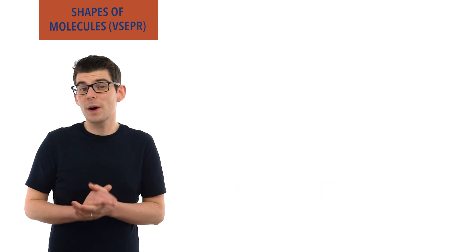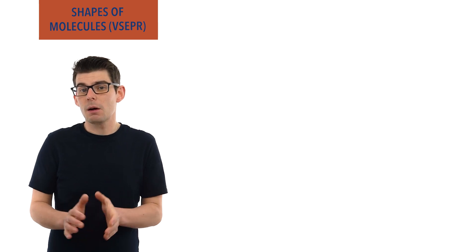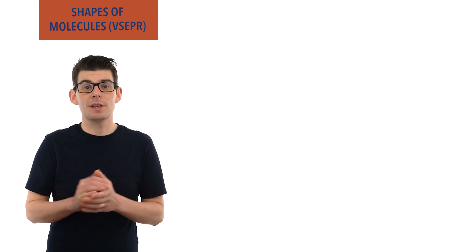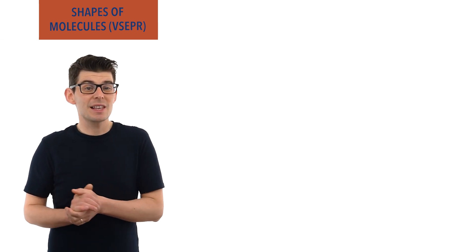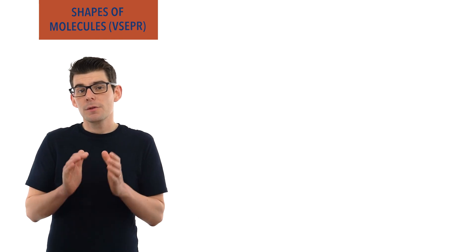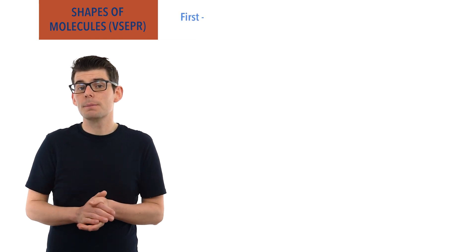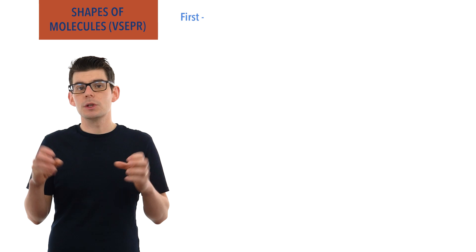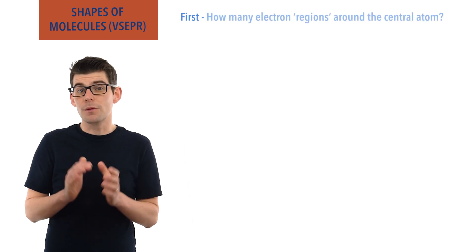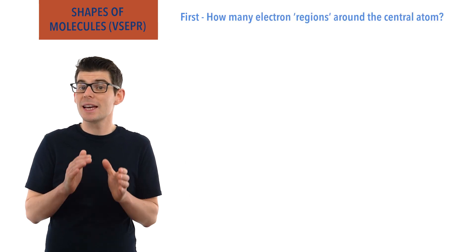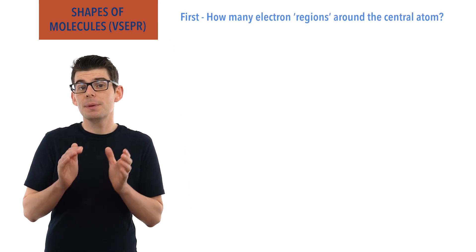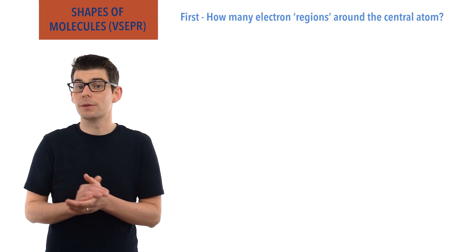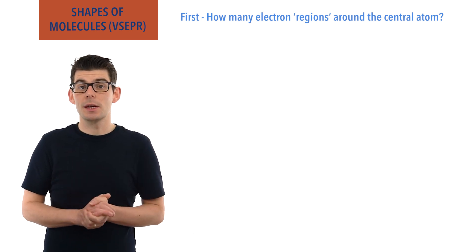There are different ways to approach learning this theory, however I like my students to think of it in two steps, and this is how I normally teach it. First we consider the total number of electron pairs or electron regions around the central atom. This gives us a starting arrangement, before we consider the bonding and lone pairs of electrons to give us a final shape.